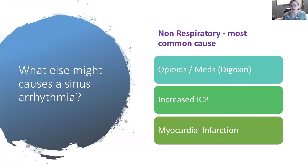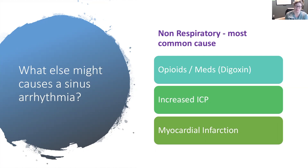There are other things that can cause a non-respiratory sinus arrhythmia. These are commonly seen with medication administration — opioids and digoxin are two examples. Increasing intracranial pressure and myocardial infarction are also causes. Increasing intracranial pressure will affect the regulatory center in the brain and can show up as a non-respiratory sinus arrhythmia. MI can change blood supply to key areas generating impulses, cause electrolyte changes, tissue damage, and cell death.